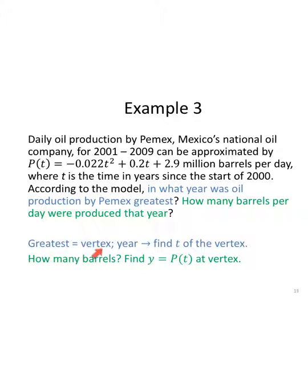Well, greatest is gonna tell me I'm looking at a vertex, right? I have a parabola that faces down so it has a maximum. The greatest is the vertex. In what year? Find the t value of the vertex. This question I have in green. How many barrels per day were produced that year? Well, P is the amount of production in millions of barrels per day. So how many barrels per day were produced that year? How many barrels? We're gonna find the y value or the P(t) after we find the t value of the vertex.